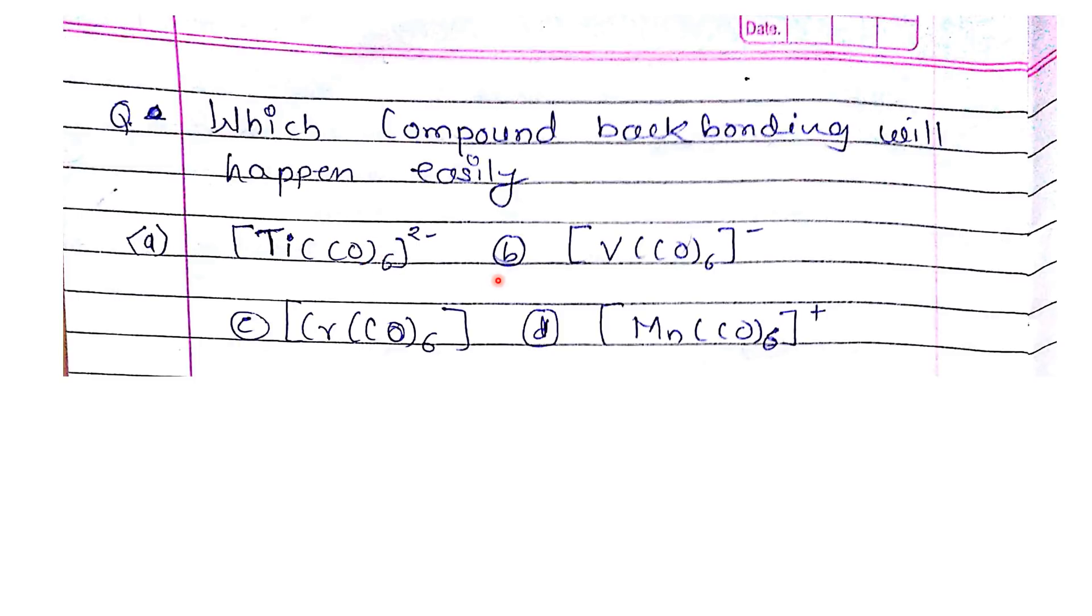When backbonding happens, the electron from metal will transfer to the pi star anti-bonding orbital of carbon monoxide. So the metal should be electron rich. If you look at Mn in plus charge, it is electron deficient.